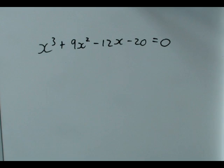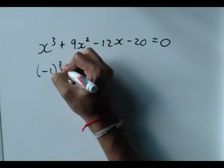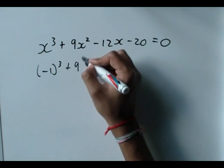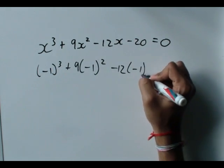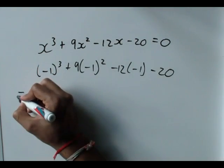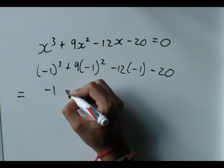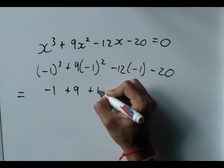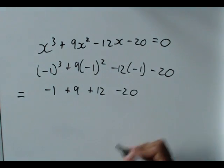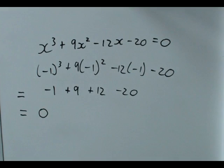First I'll check that it works. I will put minus one where x is. x cubed becomes minus one cubed plus nine x squared becomes minus one squared minus twelve times minus one minus twenty. And this is equal to minus one cubed is minus one. Minus one squared is positive one. So that becomes a plus nine. Minus twelve times minus one is positive twelve. And minus twenty does not change. And this is equal to zero. Eight plus twelve minus twenty, which is equal to zero. So, minus one does work.